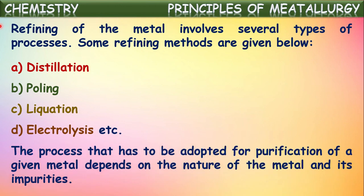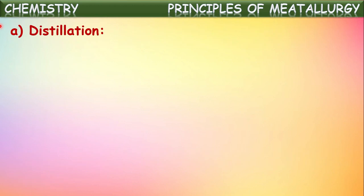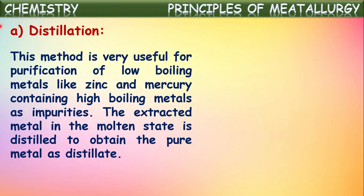The process that has to be adopted for purification of the given metal depends upon the nature of the metal and its impurities. Based upon the nature of the main metal and the nature of the impurities, the method to be chosen will be decided. Let us see first how distillation is used for the purification of metals. This method is very useful for purification of low boiling metals like zinc and mercury containing high boiling metals as impurities.